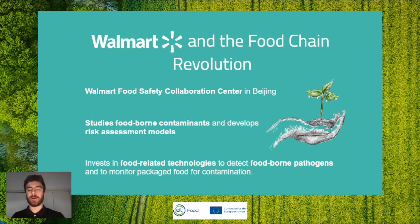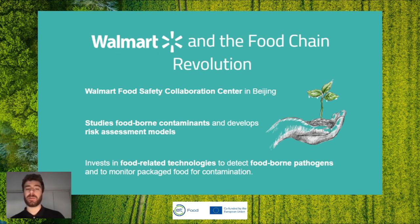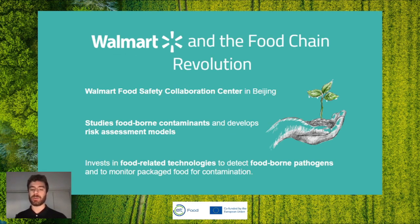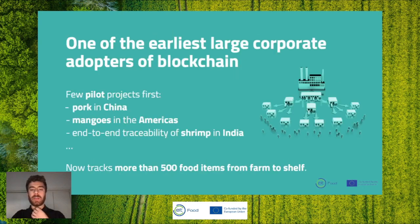Walmart founded the Walmart Food Safety Collaboration Center in Beijing and invested around $25 million in the last five years to study foodborne contamination and develop risk assessment models usable by any producer. Walmart has been investing very strongly in food-related technology such as blockchain to detect foodborne pathogens and monitor contamination. Walmart was one of the first adopters of IBM blockchain technology for supply chain and food chain use, starting through two pilot projects.